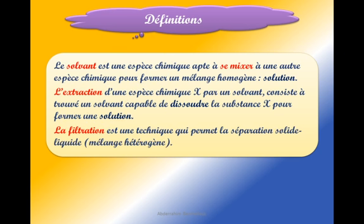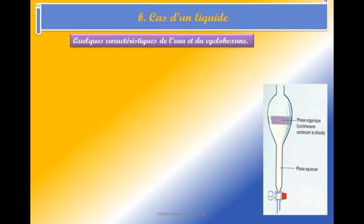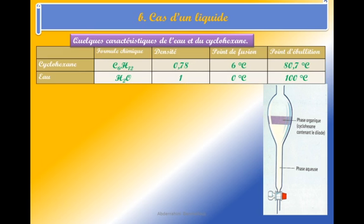La filtration est une technique qui permet la séparation solide-liquide d'un mélange hétérogène. Quelles sont les caractéristiques de l'eau et du cyclohexane ? Le cyclohexane a pour formule C₆H₁₂, densité 0,78, point de fusion 6°C, point d'ébullition 80,7°C. Pour l'eau, formule H₂O, densité 1, point de fusion 0°C, point d'ébullition 100°C.